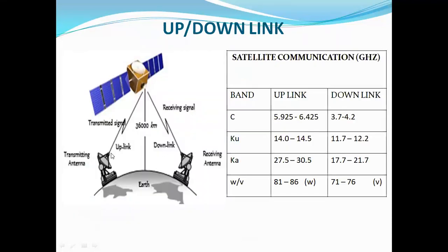As mentioned in earlier classes, uplink is the link from the satellite base station to the satellite. The reverse link, from the satellite transponder to the earth station, is called downlink.